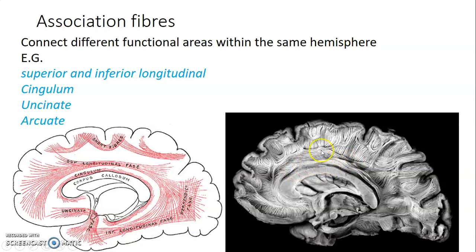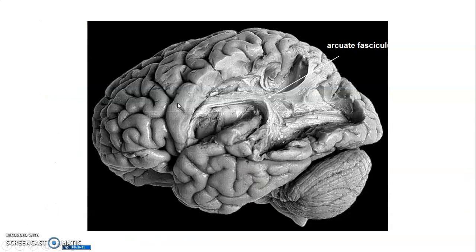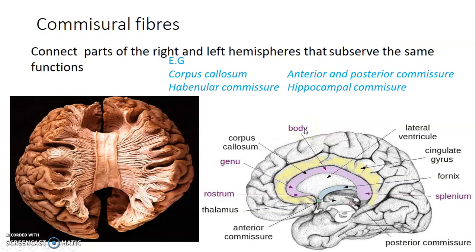These fibers connect different functional areas within the same hemisphere. The cingulum is above the corpus callosum, the uncinate courses to connect frontal and temporal lobes, and the arcuate fasciculus connects Broca's and Wernicke's areas.